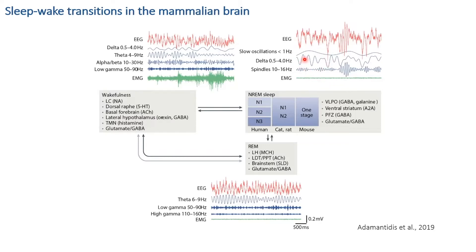During non-REM sleep we have slow wave activity, including slow oscillations below one hertz and delta waves between 0.5 and 4 hertz. From non-REM, animals can transition back to wakefulness or to REM sleep. REM sleep is very peculiar because the EEG is almost identical to wakefulness, though the EMG is nearly completely flat, reflecting complete muscle atonia. We observe a dominance of theta and gamma activity similarly to wakefulness, which is why REM is also called paradoxical sleep.